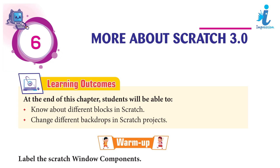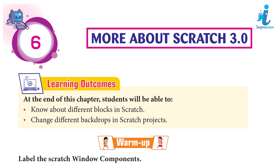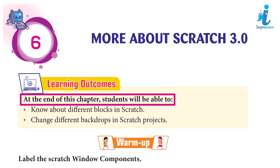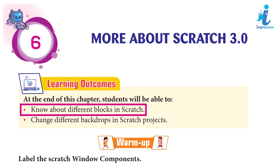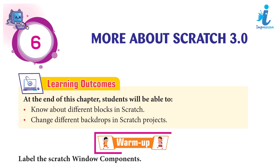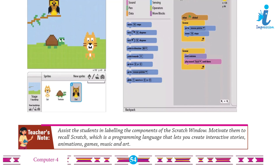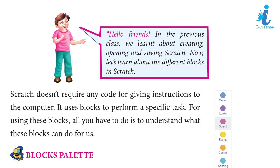Chapter 6: More About Scratch 3.0. Learning outcomes: at the end of this chapter, students will be able to know about different blocks in Scratch and change different backdrops in Scratch projects. Warm up: label the Scratch window components. Teachers' note: assist students in labeling the components of the Scratch window and motivate them to recall Scratch, which is a programming language that lets you create interactive stories, animations, games, music, and art.